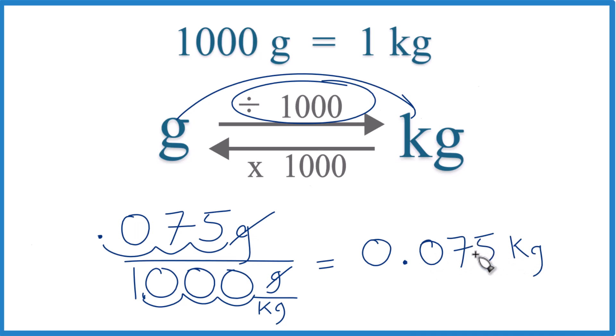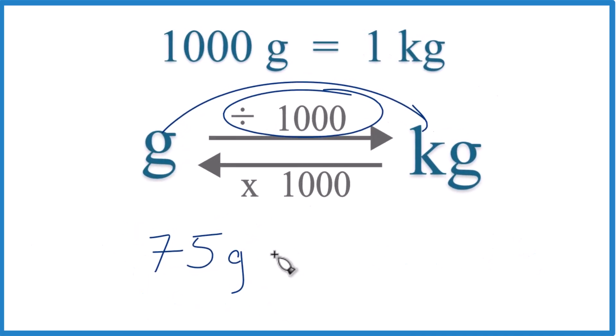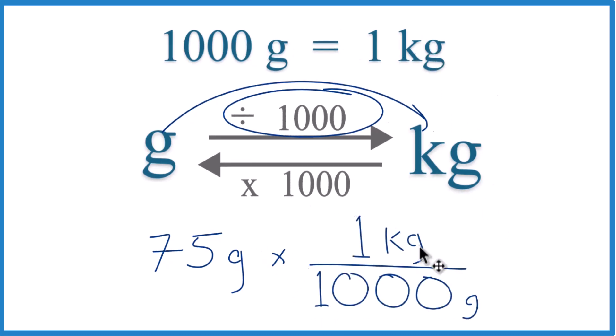If your teacher wants you to multiply by a conversion factor, here's how you do that. We take our 75 grams, and then we're going to multiply it by a conversion factor, and we want grams on the bottom so that the grams will cancel out. So 1 kilogram is 1,000 grams. 1 kilogram over 1,000 grams.